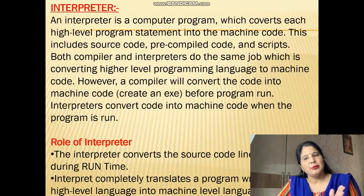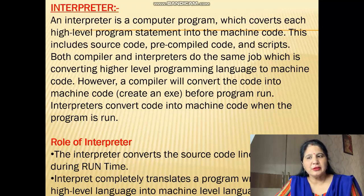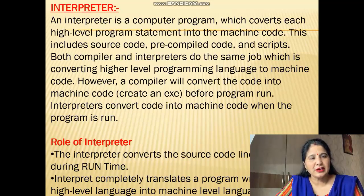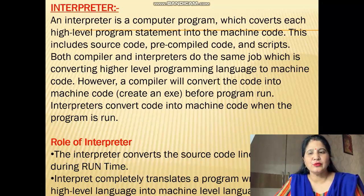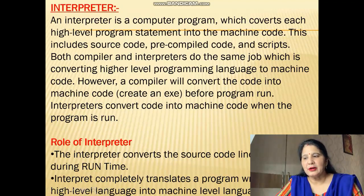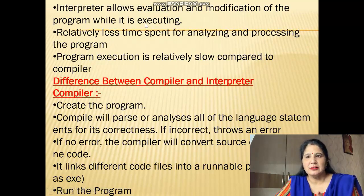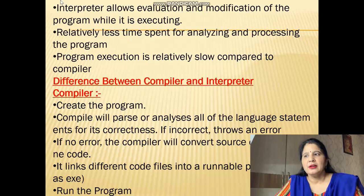The compiler can convert the whole program before it runs on the system, but the interpreter converts the code while the program is running. The role of the interpreter is to convert the source code line by line during run time — first line, then second line, then third line, and so on. The interpreter completely translates a program written in a high level language into machine level language. It also allows modification of the program while it is executing, so we can fix errors or mistakes shown in the program during execution. It takes relatively less time for analyzing and processing.